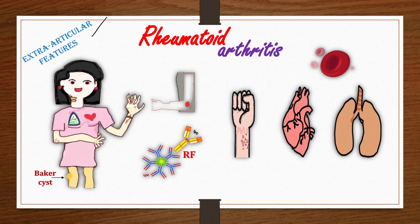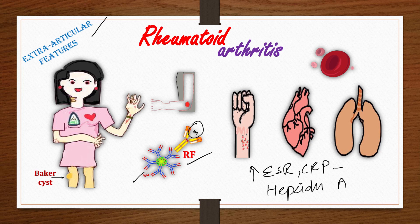As we already discussed, rheumatoid factor is an IgM against the Fc portion of IgG. Patients will also present with elevated levels of ESR and CRP — the inflammatory markers — along with hepcidin, the acute phase reactant. Rheumatoid arthritis is an autoimmune, chronic, symmetric, systemic inflammatory arthritis, meaning it can affect any part of the body.